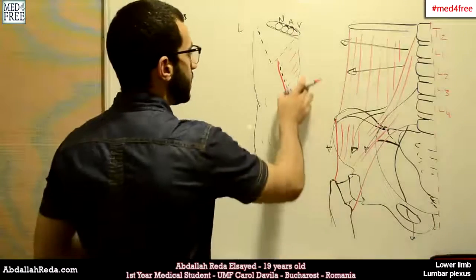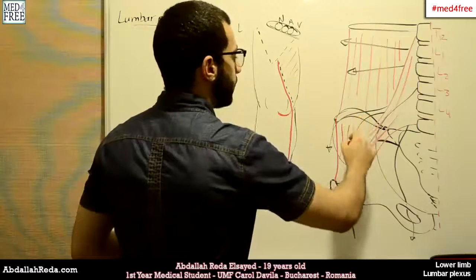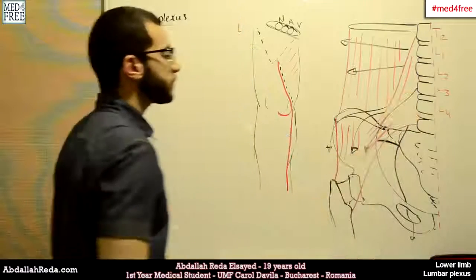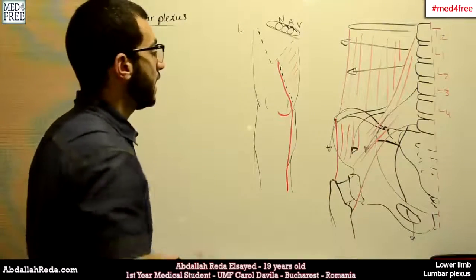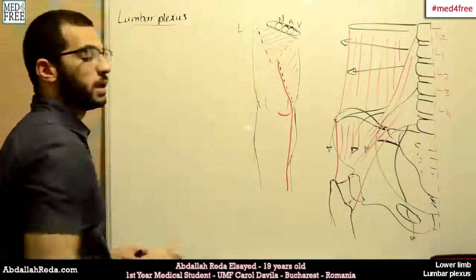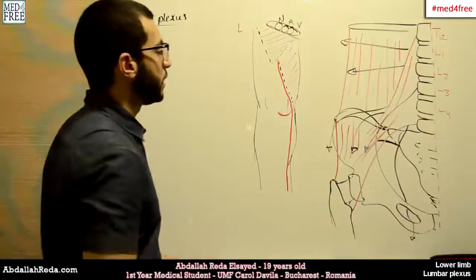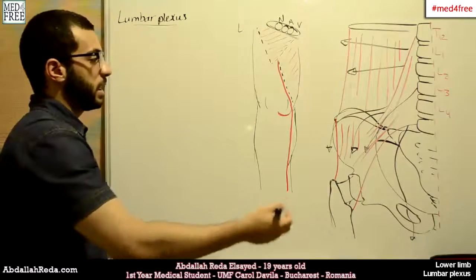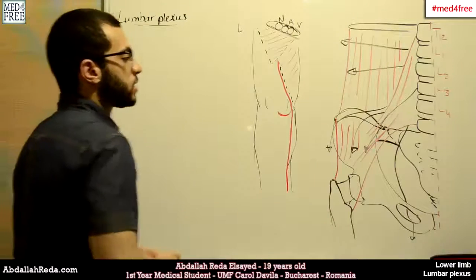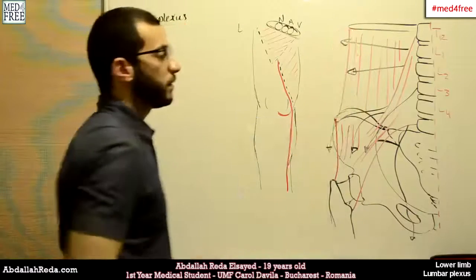The genitofemoral nerve gives two branches. The femoral branch is a cutaneous branch that innervates the skin of the femoral triangle. The genital branch innervates the skin of the penis and scrotum, or the labia majora in females.